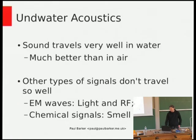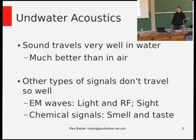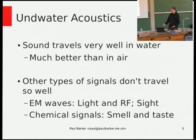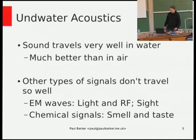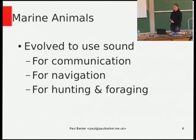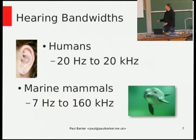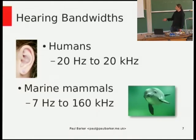Why do we care about this? In underwater acoustics, there are a lot of things that don't travel very well in water. In air we're used to using RF to get information around, and animals use smell to find things. Underwater, those sorts of signals don't really travel very far — the one that travels well is sound. So what you end up with is marine animals that have evolved to use sound as their primary mode of sensing their environment: all their communication, navigation, looking for food, and moving around is based on their ability to use sound. Humans have a hearing bandwidth of 20 Hz to 20 kHz, while marine mammals have a much wider bandwidth — almost two orders of magnitude wider — and that will come in later when I talk about data processing.